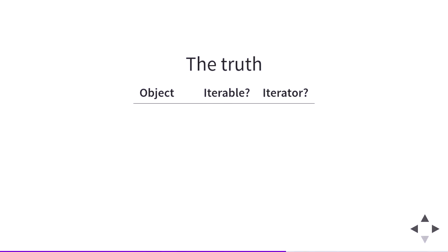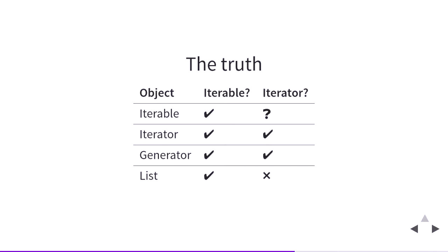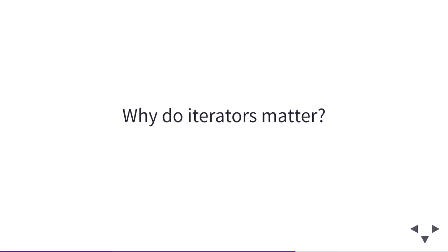Iterables are not necessarily iterators, but iterators are always iterables. For example, generators are iterators, but lists are not iterators. Iterables are not always iterators, but iterators are always iterables. So let's talk about why we should care about iterator things.